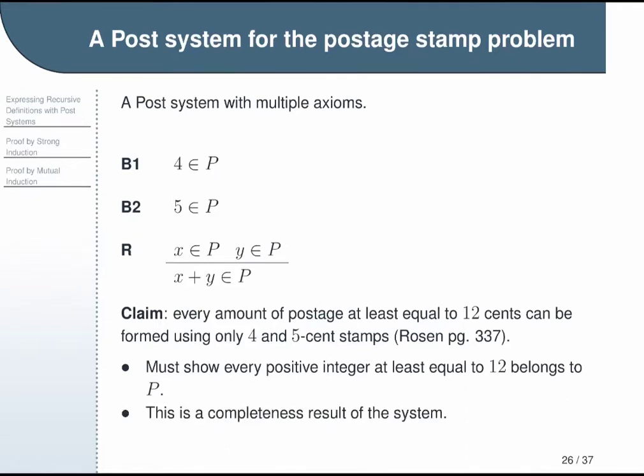Note that this is a completeness result because we're showing that all positive integers greater than or equal to 12 belong to P, but not that only positive integers greater than or equal to 12 belong to P. That would be a soundness result. In fact, we cannot show that because it's not true—we can see right away 4 and 5 are in P, and they are not greater than or equal to 12. I point this out because we used strong induction to prove a soundness result last time and a completeness result this time. Sometimes people get to thinking that maybe strong induction always goes with soundness, but that is not true.